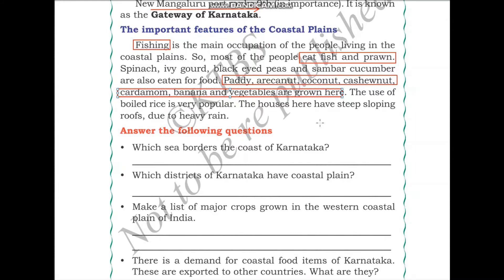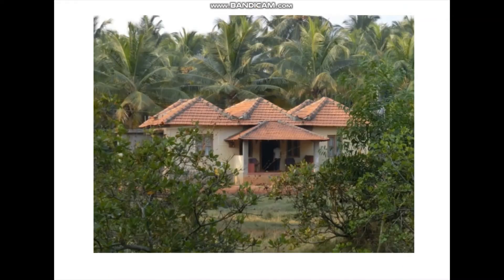The houses in the coastal plains have steep sloping roofs due to heavy rainfall. When it rains very heavily, the slope helps get rid of the water. As you can see in this image, this house has a sloping roof, and because of this, when it rains heavily, the slope drains the water so there is no collecting of water on the roof.